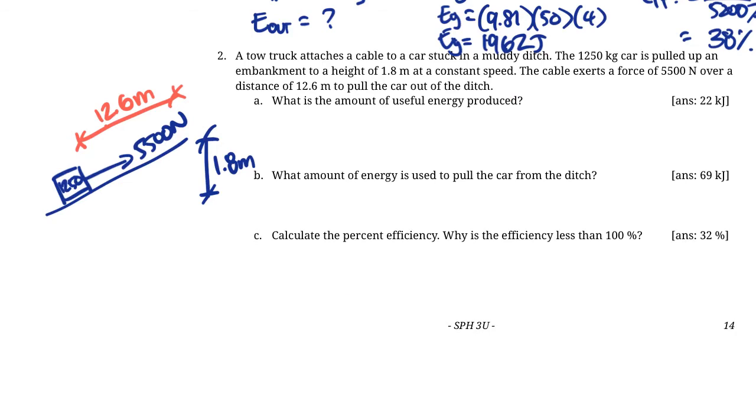What is the amount of useful energy produced? The useful energy is the difference in height. It started at this level and ended at 1.8 meters. So the useful energy produced was to lift the box 1.8 meters. That's just mg delta H where mass is 1250, g is 9.81, delta H is 1.8 meters. This calculation gives us 22 kilojoules.